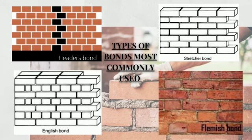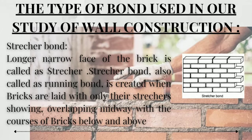Here is the pictorial representation of a bond. The type of bond used in our study of wall construction is the stretcher bond. The longer narrow face of the brick is called a stretcher. Stretcher bond, also called running bond, is created when bricks are laid with only their stretcher face showing, overlapping midway with the courses of bricks below and above.